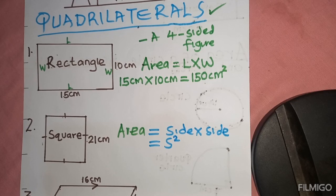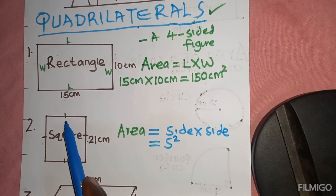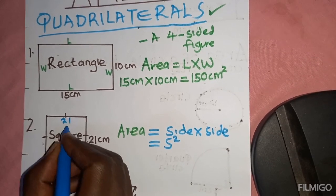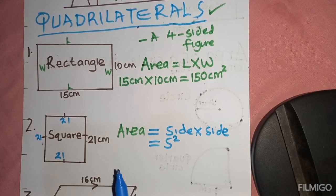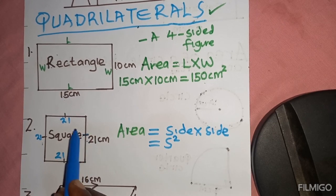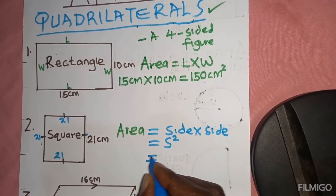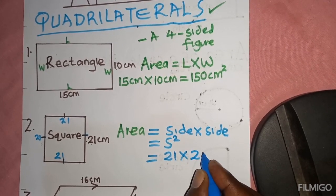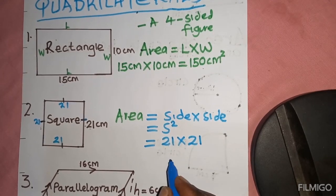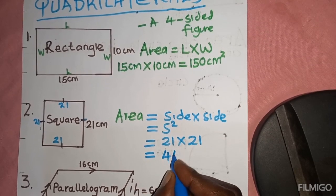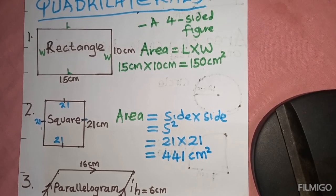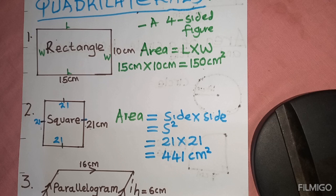So in our case, each side is 21 centimeters. Because all the sides are equal, if this is 21, all the others are also 21. It is also good to note that a square is shown by tick marks on each side, meaning all the sides are equal. So when you are given one side, you are effectively given all the sides. Area equals 21 times 21, which gives you 441 square centimeters. That is the area of that square.